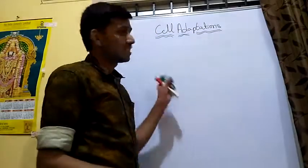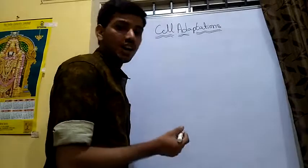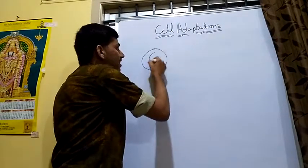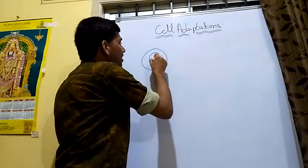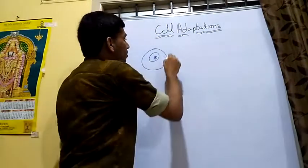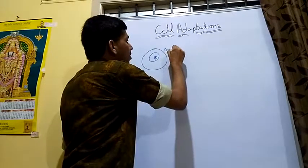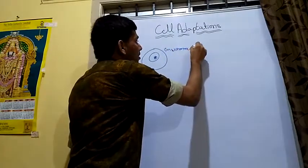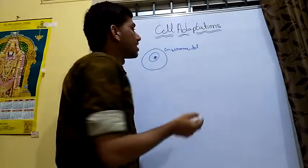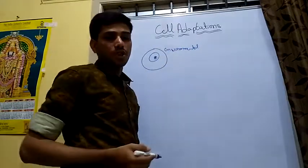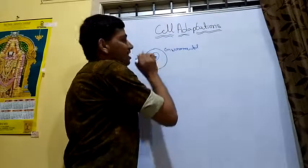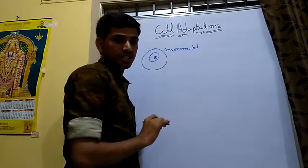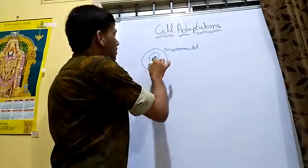Today's topic is cell adaptation. Cell adaptation means the changes taking place in a cell in response to environmental changes. These environmental changes can be internal environment or external environment. Any changes taking place in a cell by means of external stimuli is called cell adaptation.